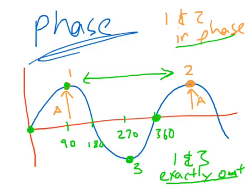For ones that are out-of-phase, between point 1 and point 3, that's 270 minus 90 is 180 degrees phase difference for out-of-phase.